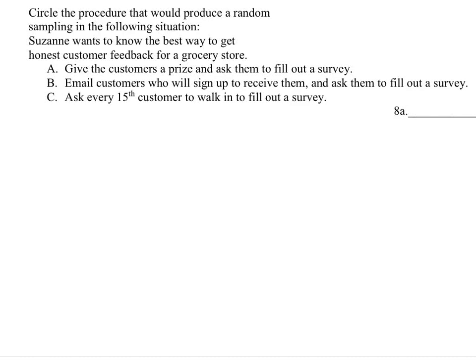Circle the procedure that would produce a random sampling in the following situation. Suzanne wants to know the best way to get honest customer feedback for a grocery store. Option A: give the customers a prize and ask them to fill out a survey. Option B: email customers who sign up to receive them and ask them to fill out a survey. Option C: ask every 15th customer who walks in to fill out a survey.